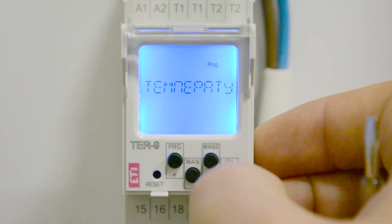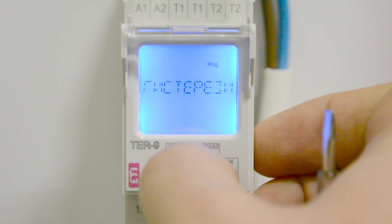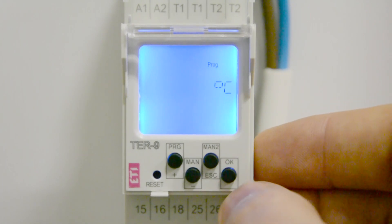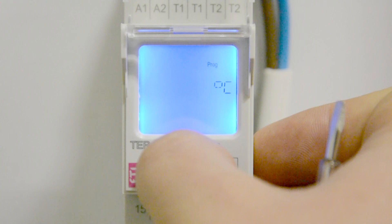An adjustable hysteresis prevents frequent switching of the output. The hysteresis is set in the range from 0.5 to 5 degrees Celsius.